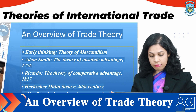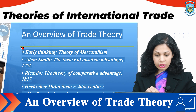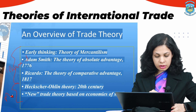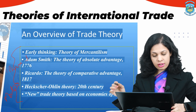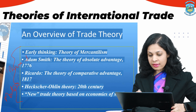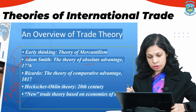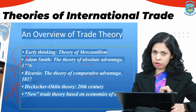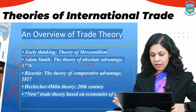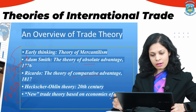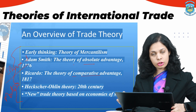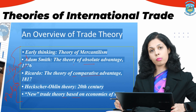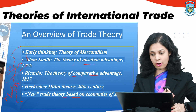We now come to an overview of trade theories, ranging from the classical era to modern theories. The first is mercantilism, then Adam Smith's theory of absolute advantage, and Ricardo's comparative advantage theory — these are the classical theories. Then we have the Heckscher-Ohlin theory from the neoclassical age, and finally the new trade theory based on economies of scale in the modern era.